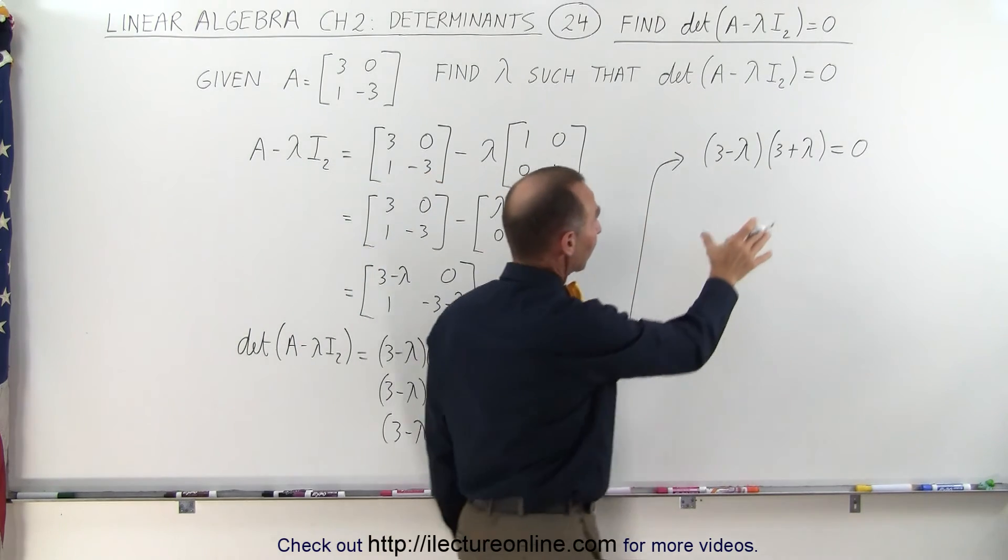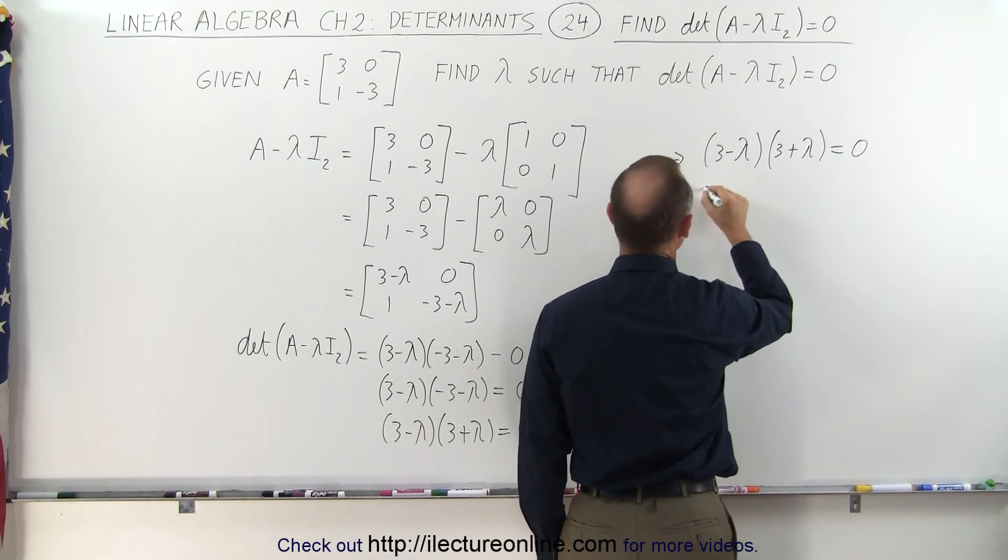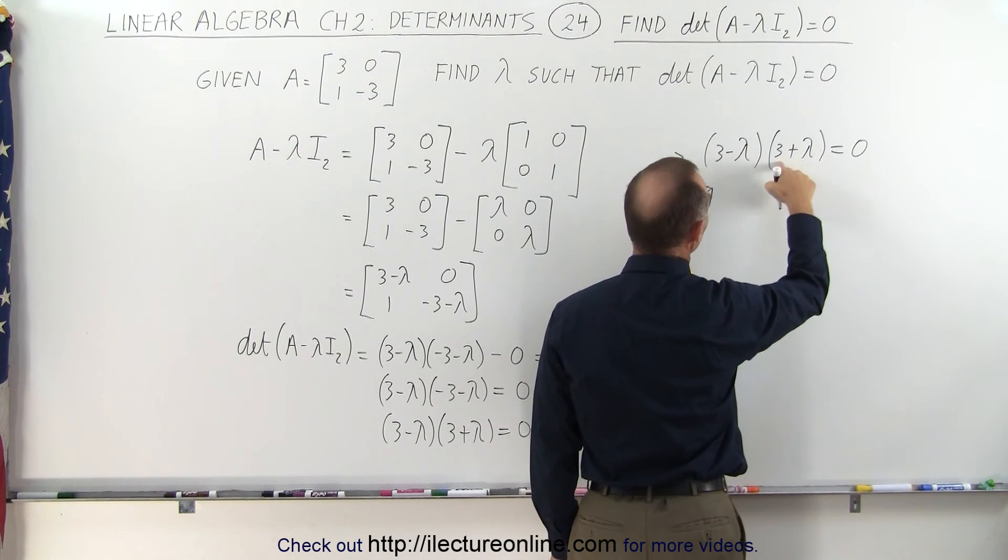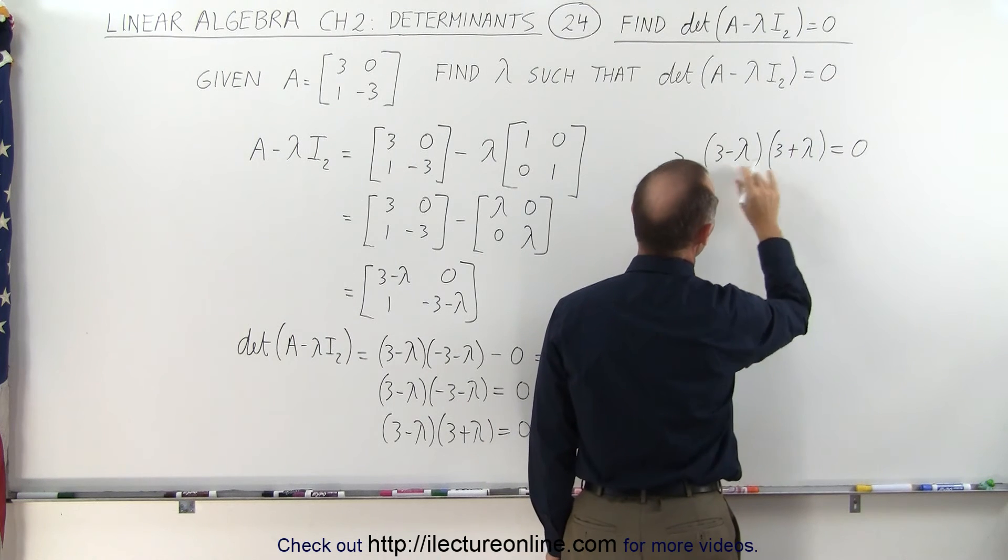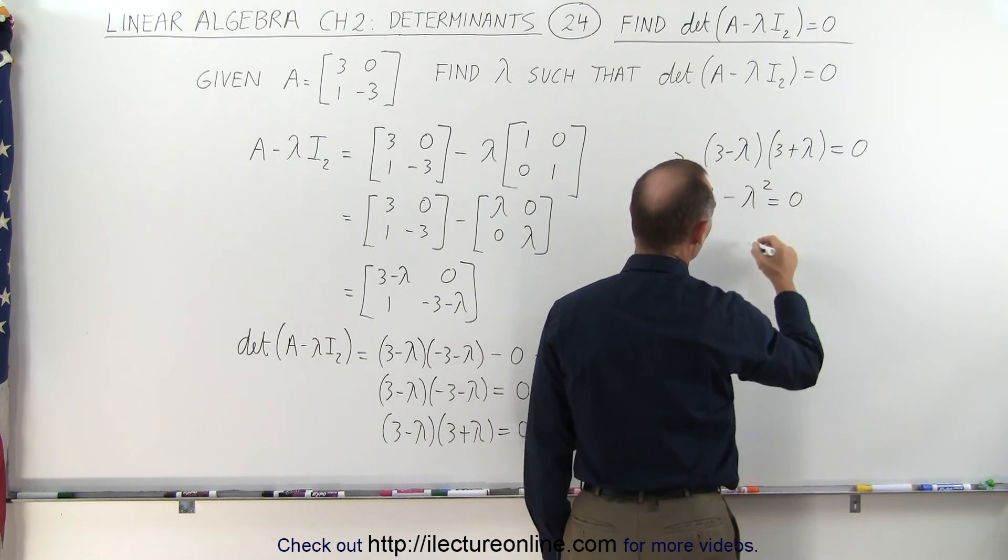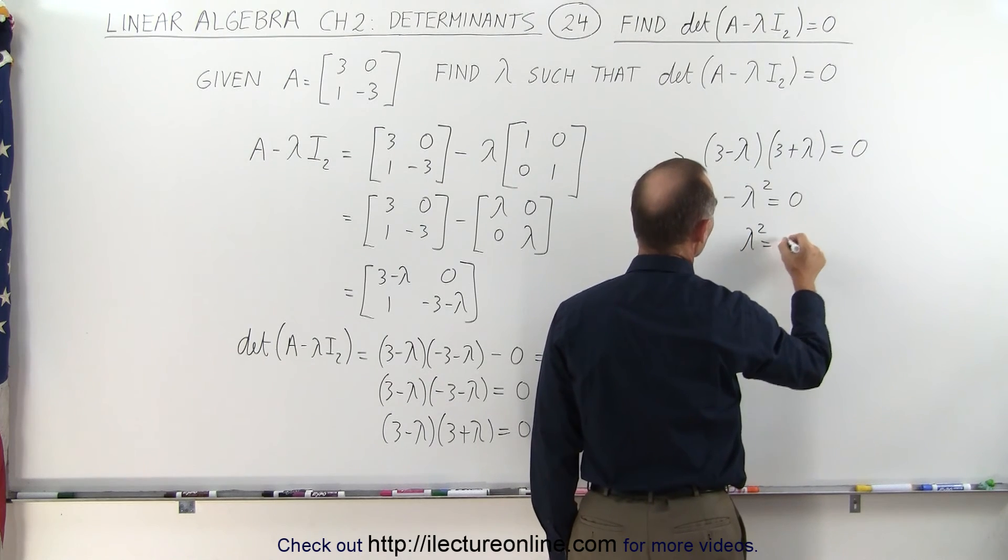Now let's multiply what we have on the left side, so 3 times 3 is 9, 3 times plus lambda is plus 3 lambda. This is minus 3 lambda, so the middle term disappears, and finally we have a minus lambda squared equals 0, or lambda squared equals 9.